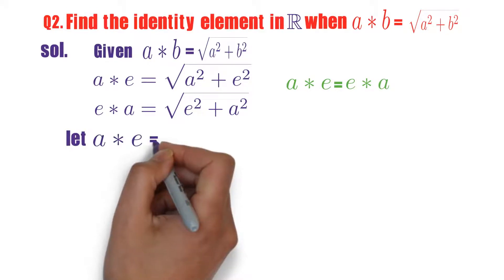We'll take either a star e equals to a or e star a equals to a. Anyone we'll take. So here I am taking a star e equals to a. What is a star e? Root over a square plus e square. That is equal to a.